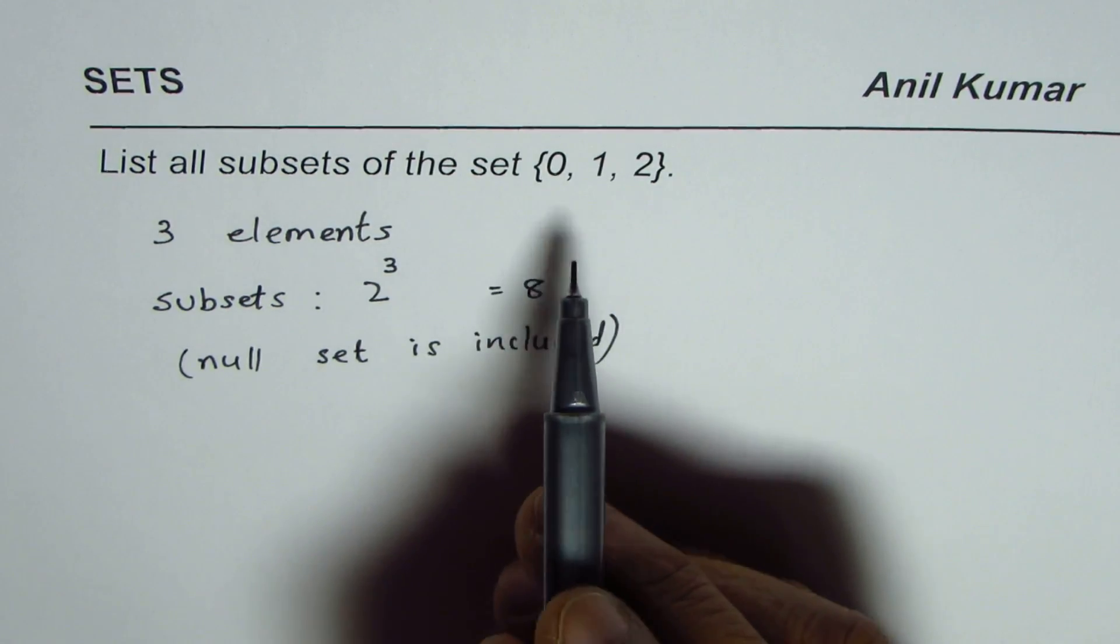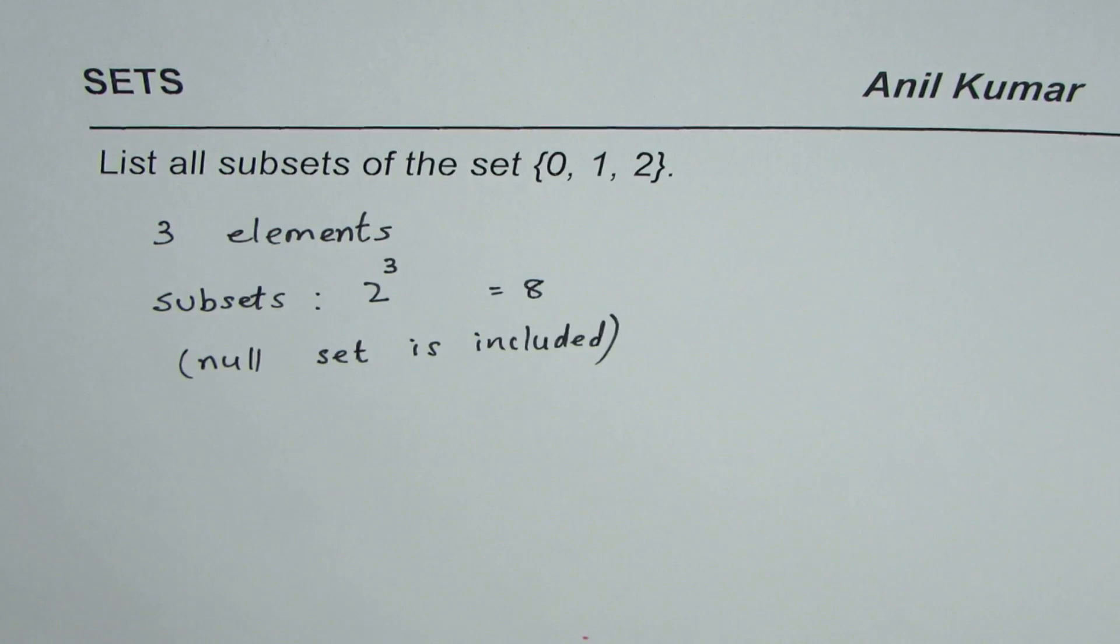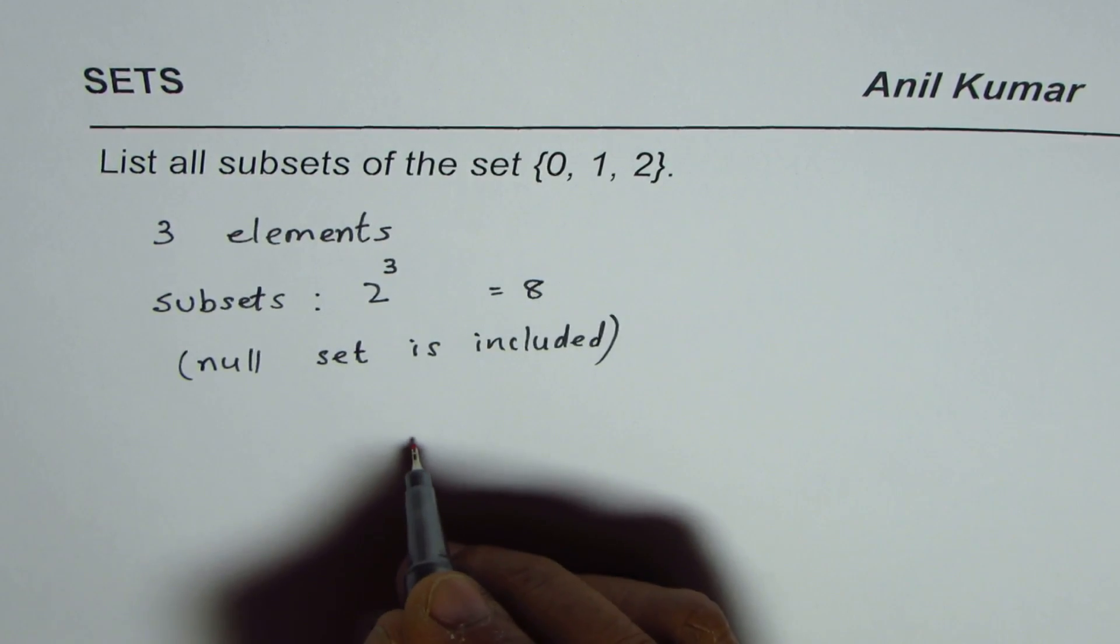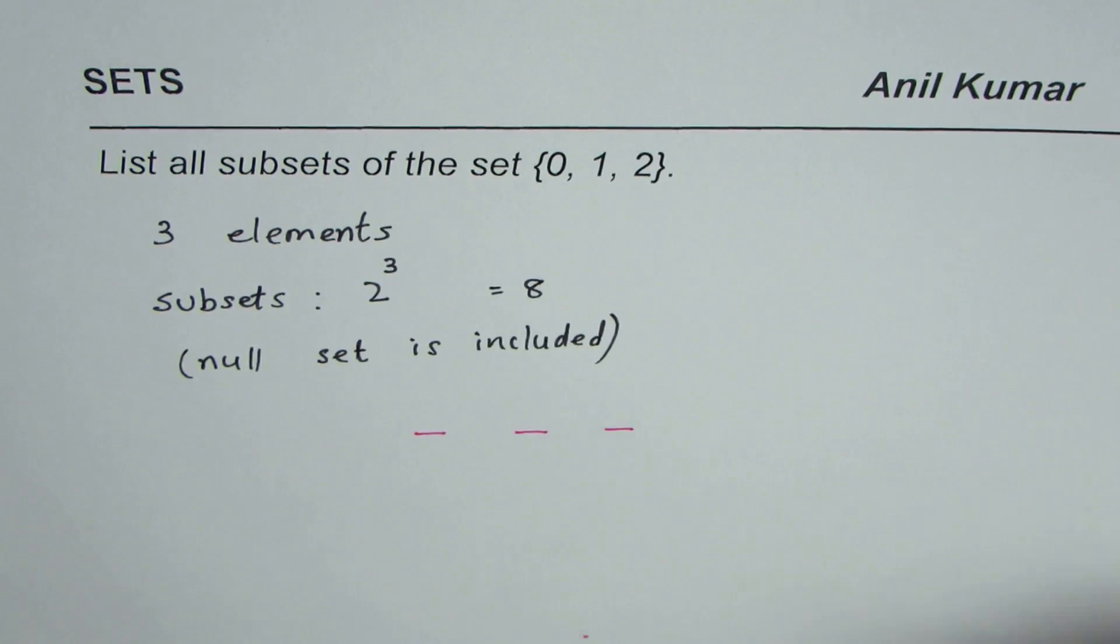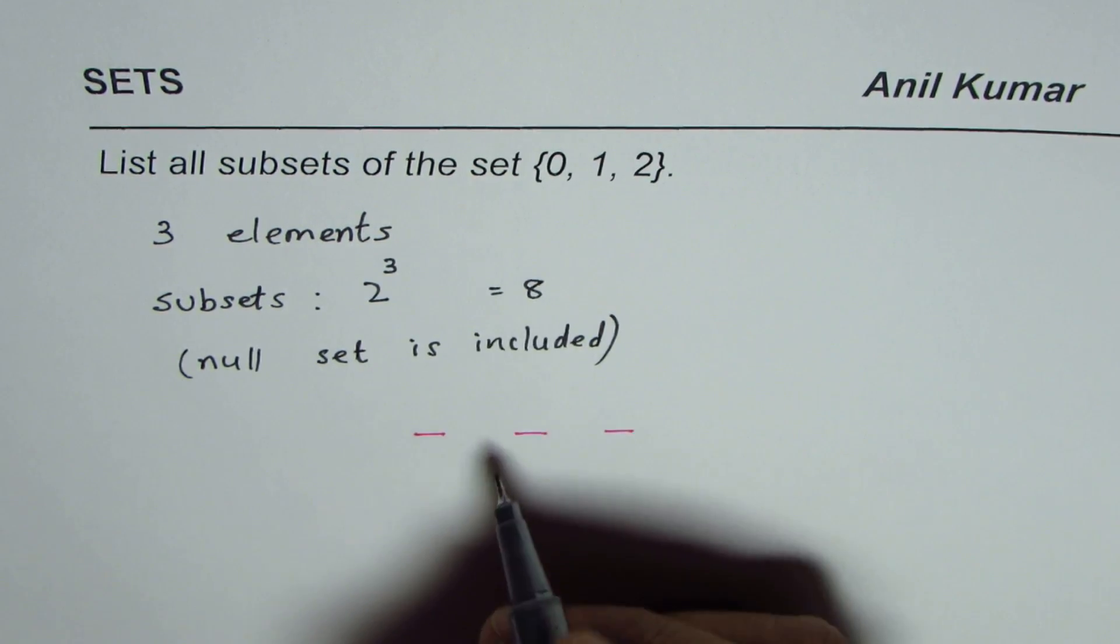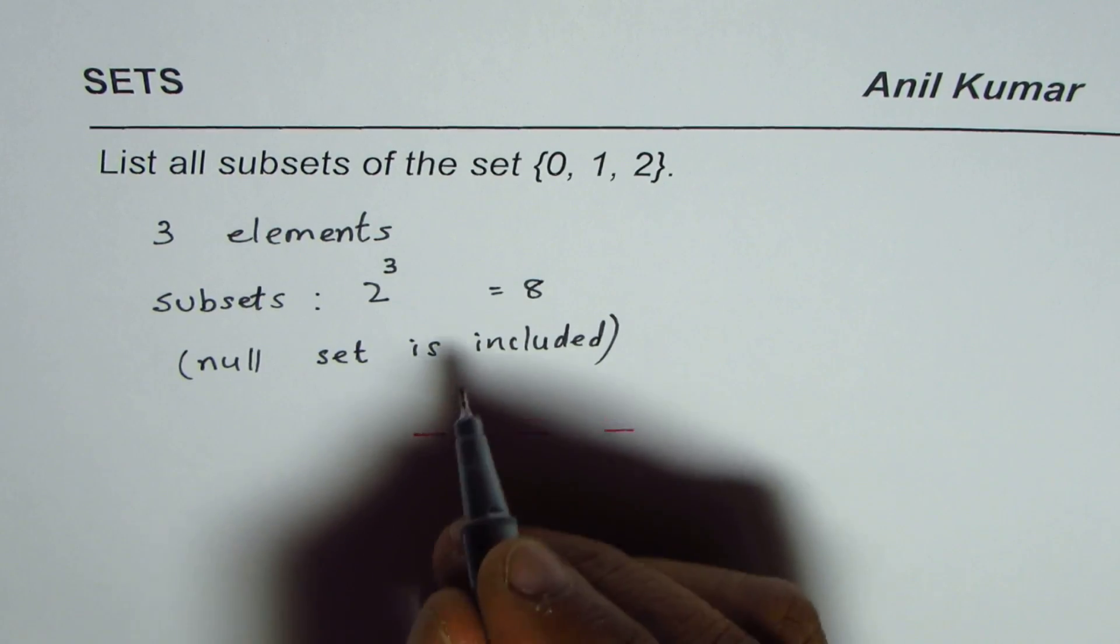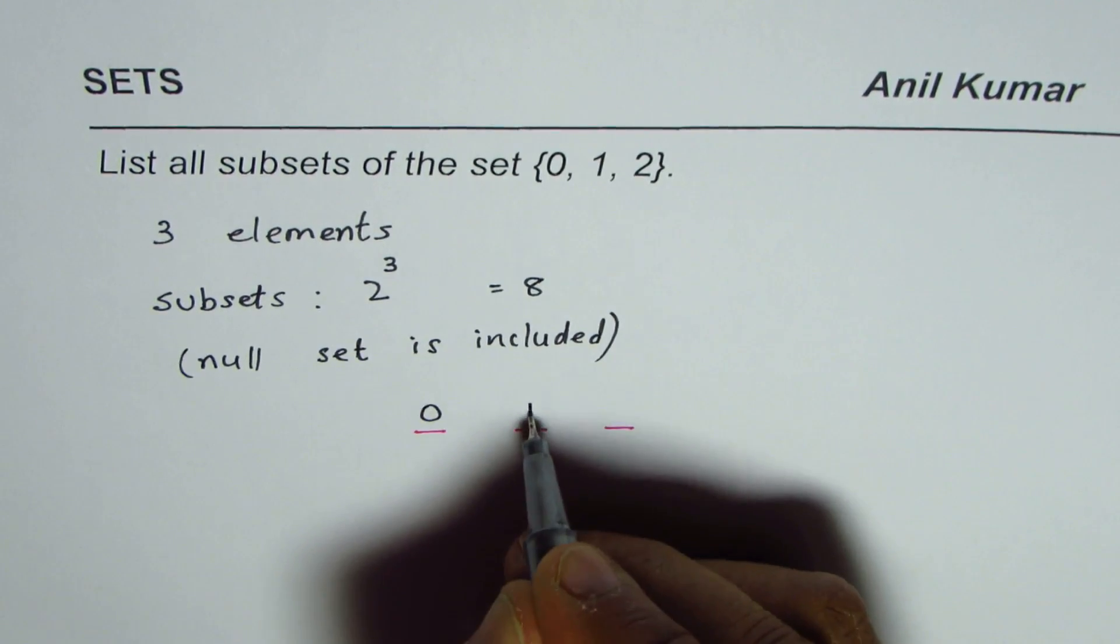The concept behind this is that we have three elements. Let's say the elements are these three. In our case, the elements are 0, 1, and 2.